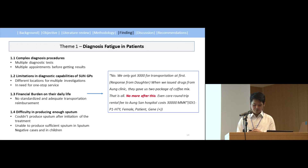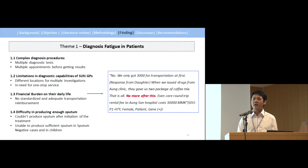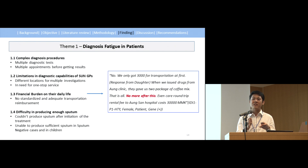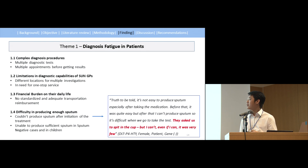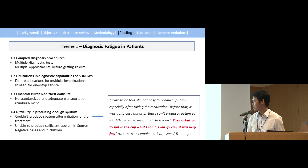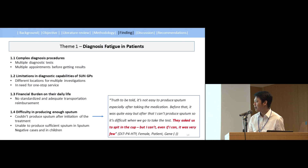Another major barrier for GeneXpert testing is difficulty in producing a morning sputum sample. When patients are registered at the clinic, they are first given medications, and the GeneXpert referral is within one week of treatment initiation. Some patients couldn't produce sputum after starting treatment. A patient quote: 'It's not easy to produce sputum, especially after taking the medications. Before, it was quite easy, but after that I couldn't. It is very difficult when we go to take the test — they asked us to spit in a cup, but I can't. Even if I can, it was very little.'